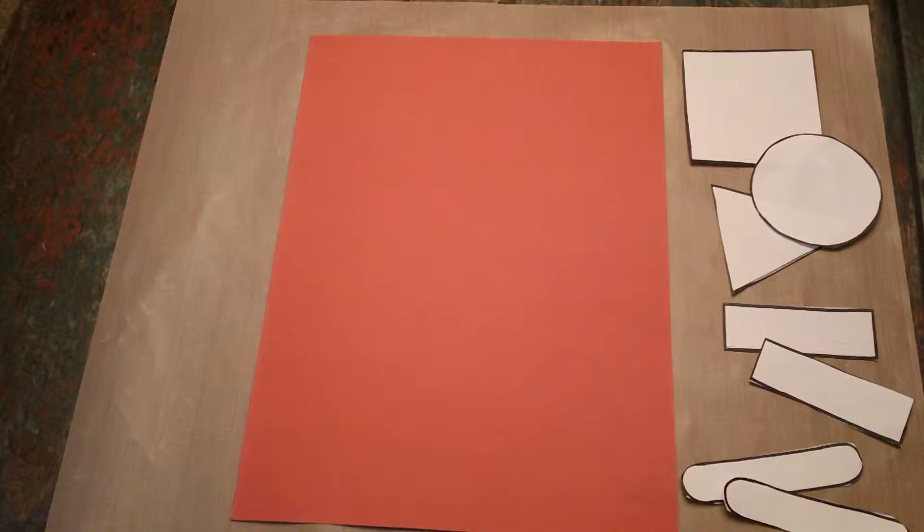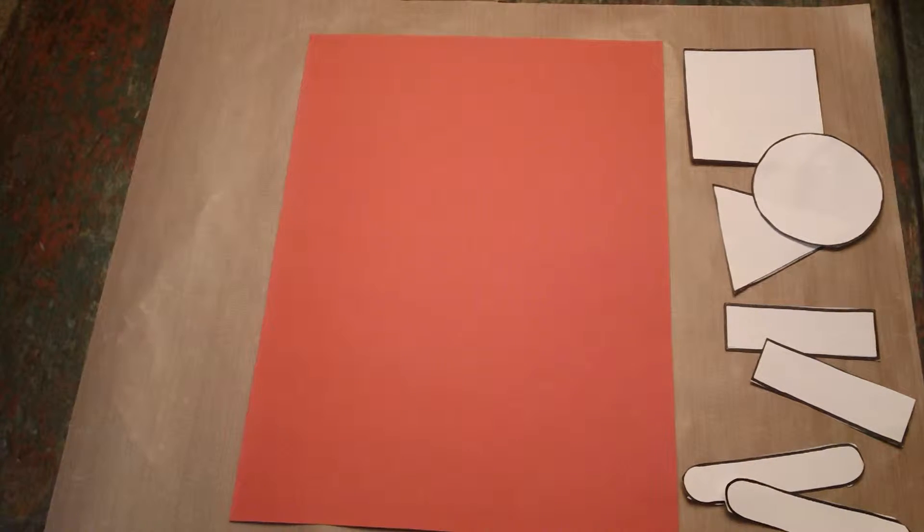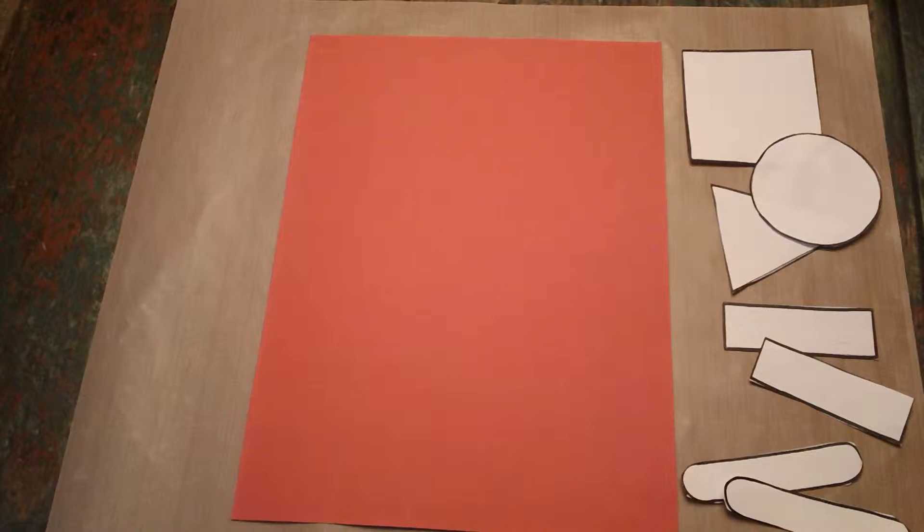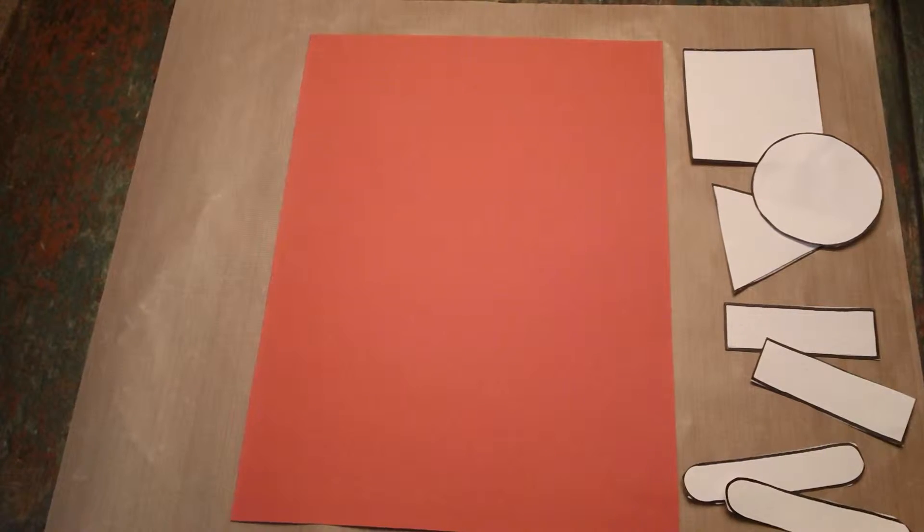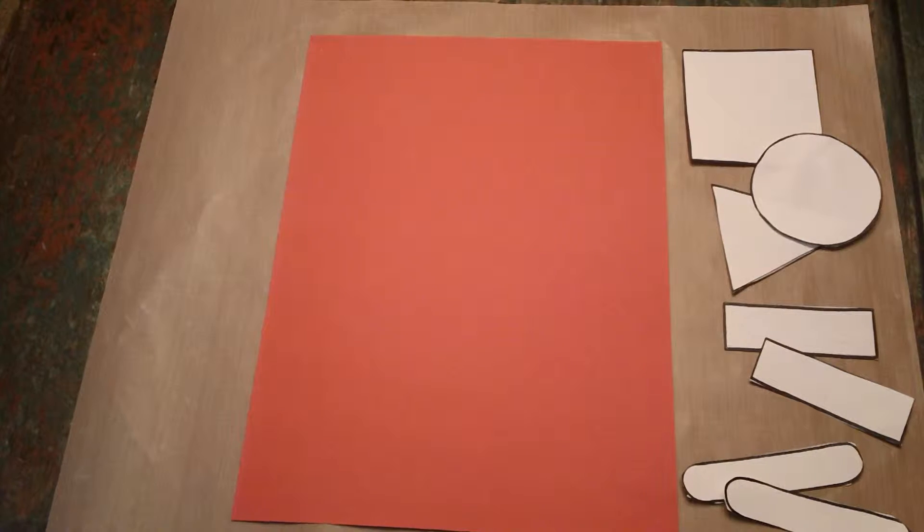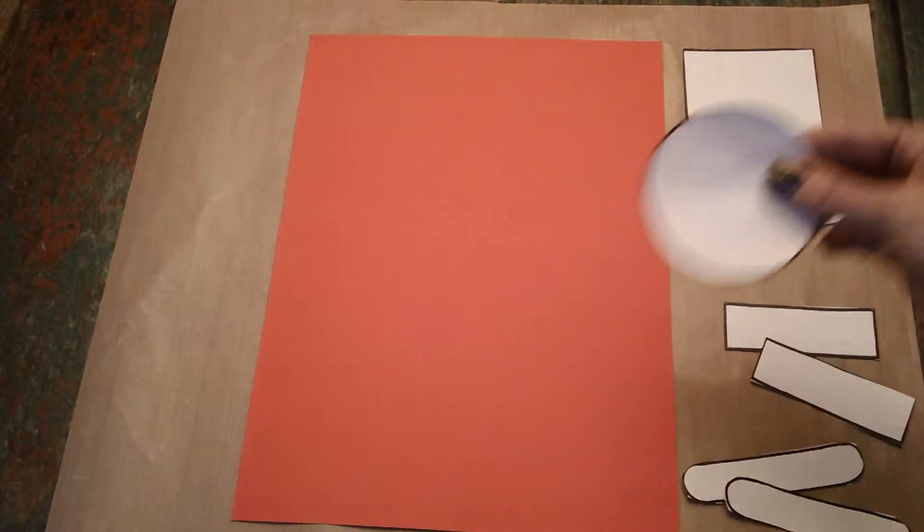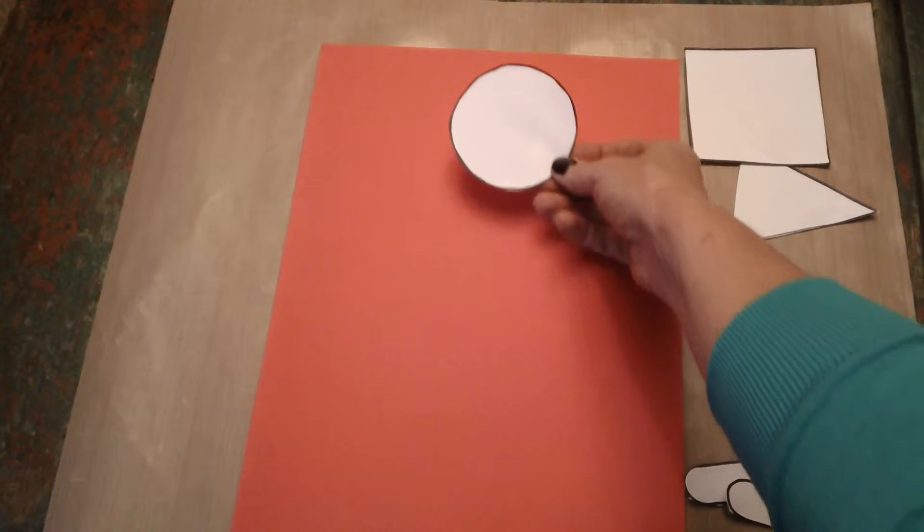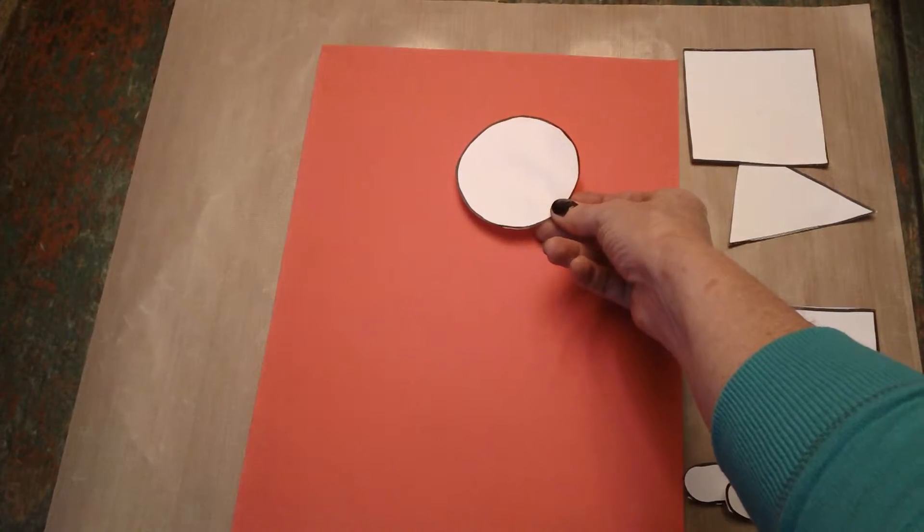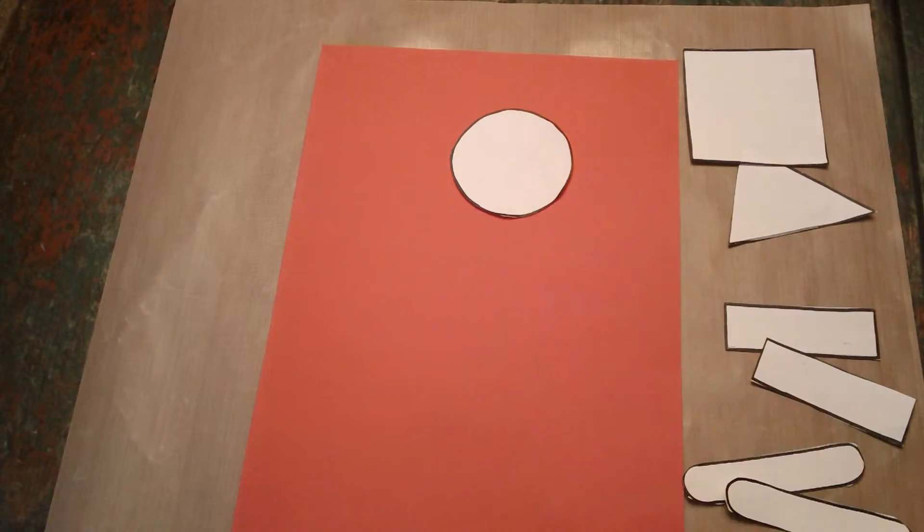Now we're going to take these shapes and we are going to make a shape person. So out of all these shapes, what shape do you think would be a great shape to use for someone's head? Yes, I think a circle also. So we're going to be putting the circle somewhere up here. I'm just going to set it there for a minute.